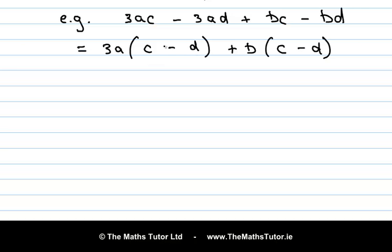So again we notice that this term and this term have a common factor. c minus d is a common factor to both of them. So we take that out, c minus d times 3a plus b. So those are the factors of that expression.